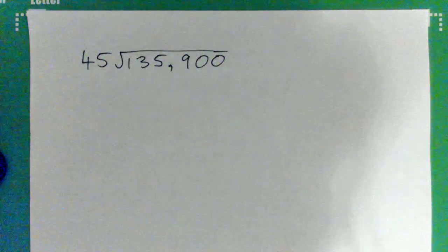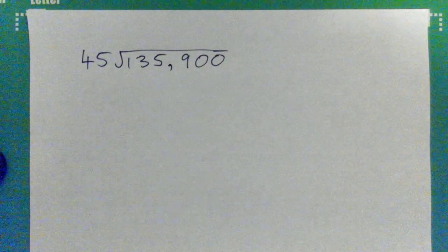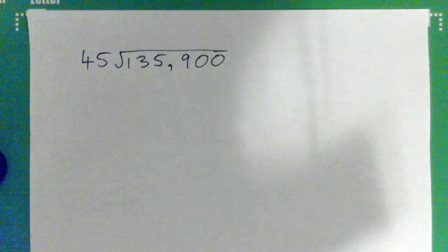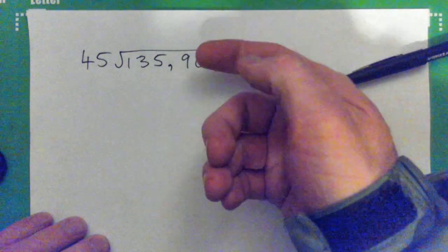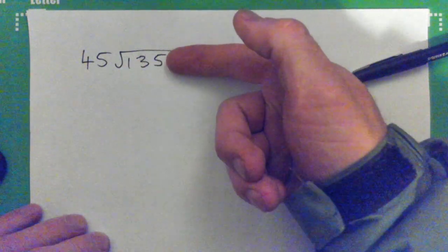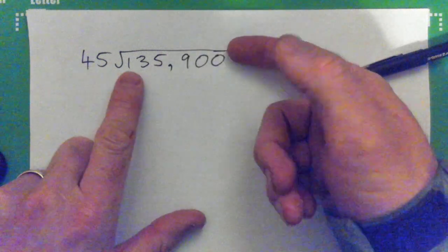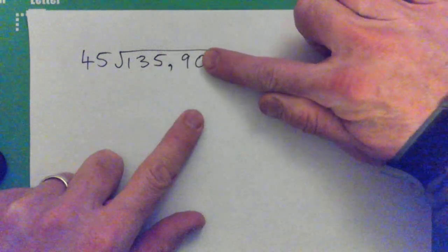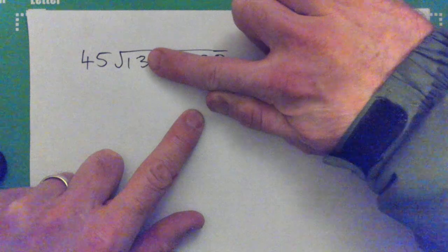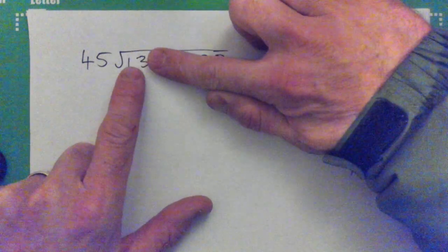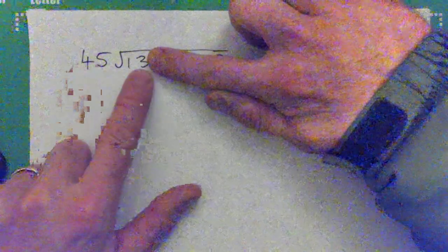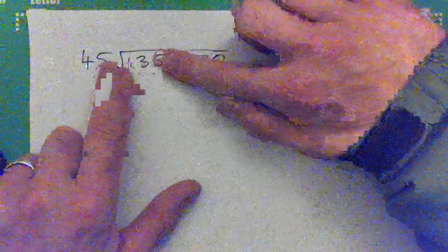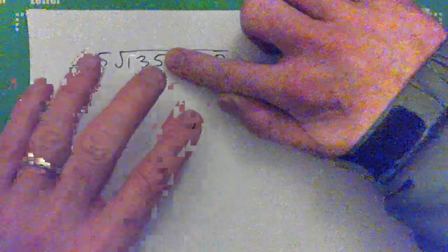Alrighty, we've got 45 and 135,900. So right, it's hard to do all at once. Let's start blocking off digits with our finger here. If we get all the way up to 1 or 13, well, you know, it doesn't go. 45 does not go into 13, but hey, it'll go into 135.